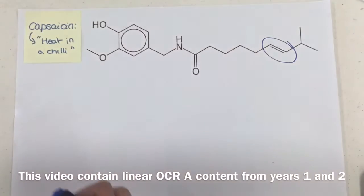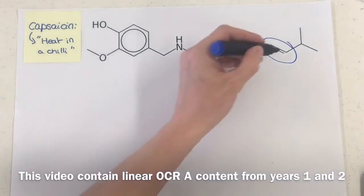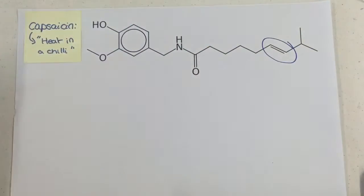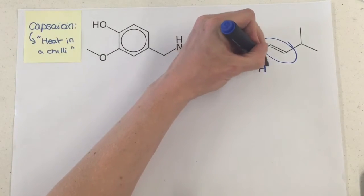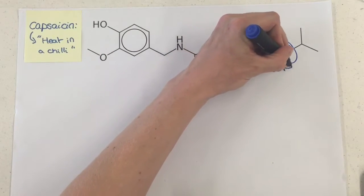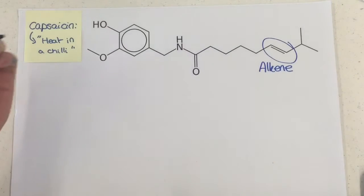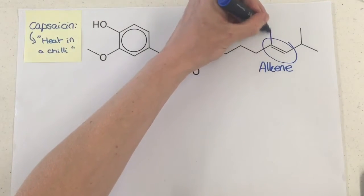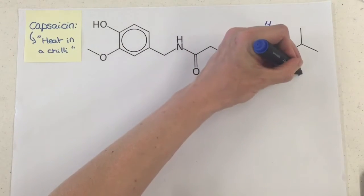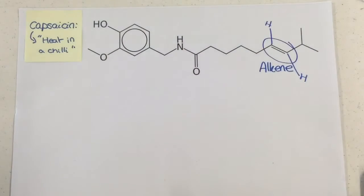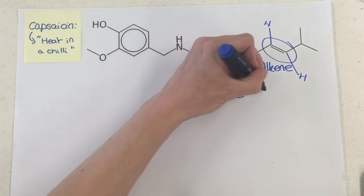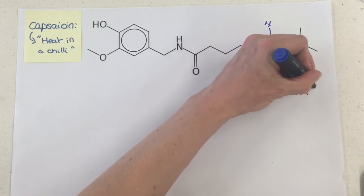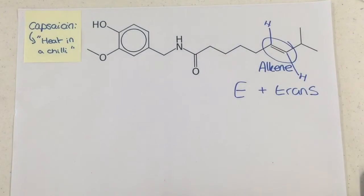I've already circled up the bit I want to start with over here, because we can see in this skeletal diagram something we are familiar with, which is an alkene carbon-carbon double bond. And look specifically at the positioning around here — what we can't see, because in skeletal you don't draw them, are the H's that would be on each carbon. This has been drawn in the E and the trans orientation.